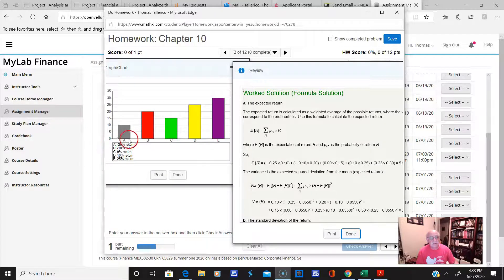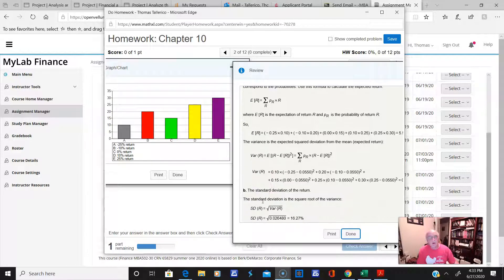But anyway, here's the returns. They want you to calculate the expected return and the standard deviation, so we'll go over that. But here's the returns, right? A, B, C, D, E, and here's the probabilities of getting those returns, right? See the probability: 10, 20, 15, all right?